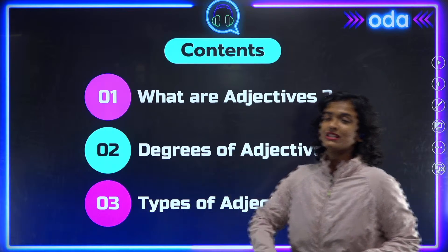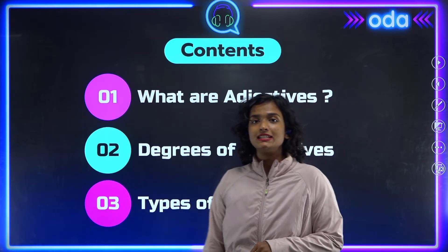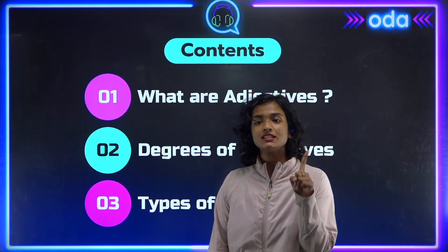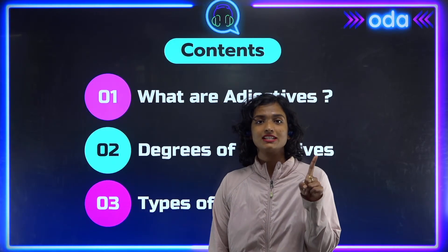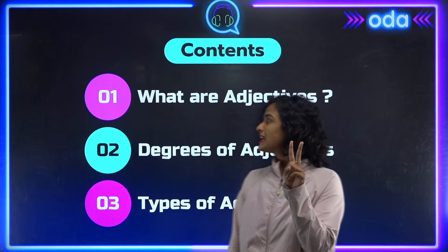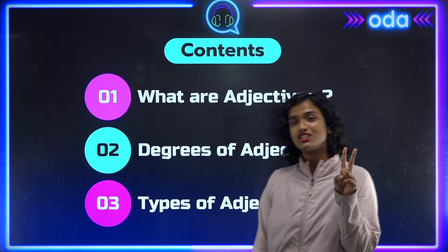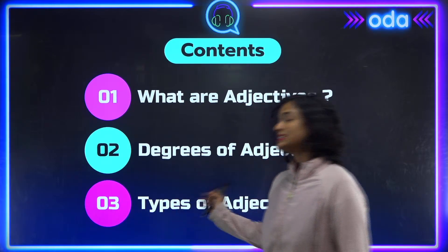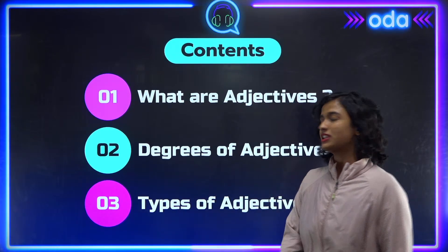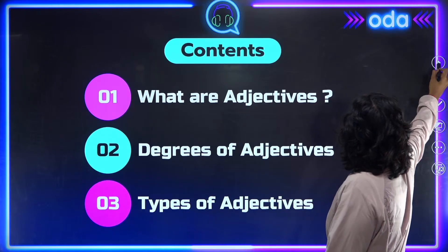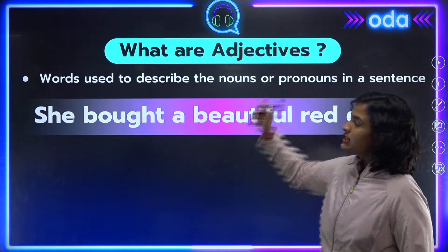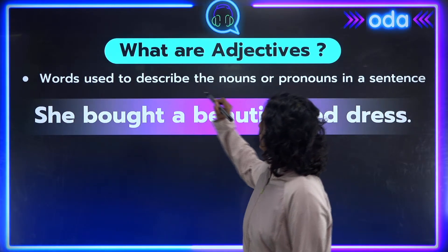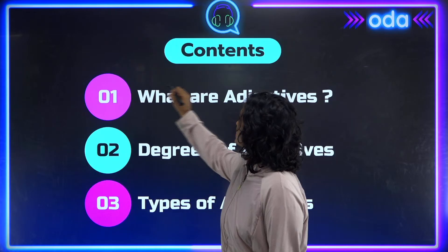Our focus today is adjectives, and our lesson is divided into three parts: first, what are adjectives; second, the degrees of adjectives; and lastly, the types of adjectives. Starting off with what exactly adjectives are — adjectives are words used to describe the noun or pronouns in a sentence.